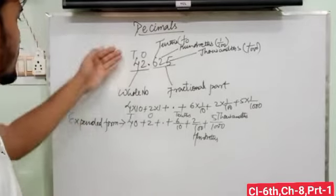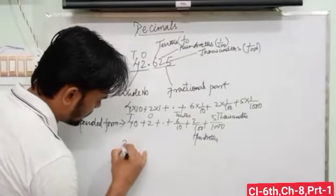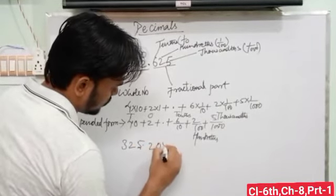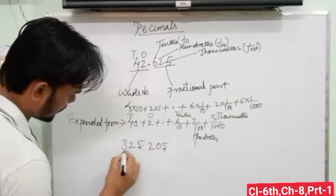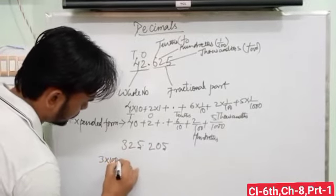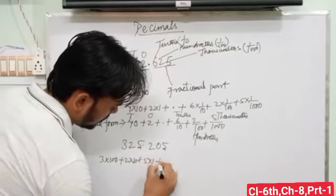Similarly, we can expand other decimal numbers. If we have 325.205, then we can write 3 into 100 plus 2 into 10 plus 5 into 1, decimal, 2 into 1 upon 10, 0, and 5 into 1 upon 1000.